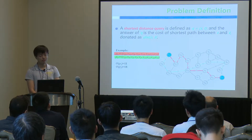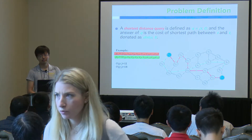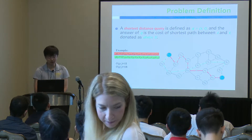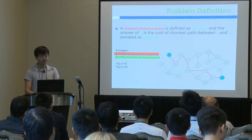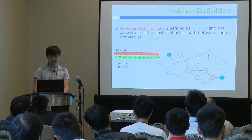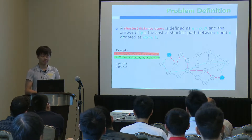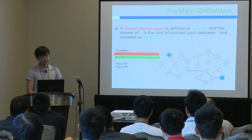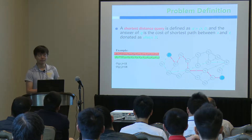The shortest distance query means that we should find the weight of the shortest path. In this example, if you want to query vertex V19 and V12, we can find many paths — the red one and the green one are two of them. The cost of the red path is only 11, which is actually the shortest path. Our target is to get the value 11.